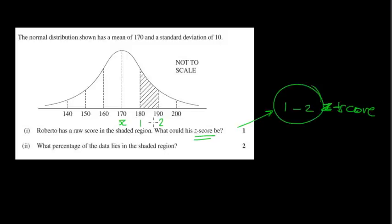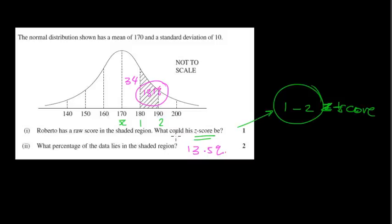What percentage of the data lies in the shaded region? We know this is 34%, this is 13.5% — so the answer is simply 13.5%. So you can see it's really not that challenging.